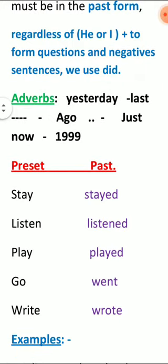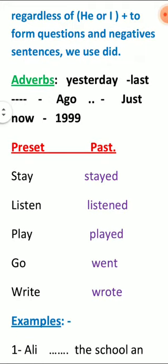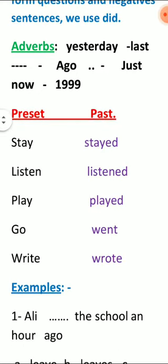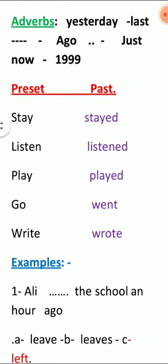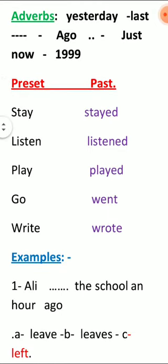من هذه المفاتيح: yesterday، وكذلك last week، last day، last... وأيضاً ago، معناها قبل قليل. الاثنان يدلان معاً على الماضي. وأيضاً تاريخ قديم. هذا على سبيل المثال لا على سبيل الحصر.